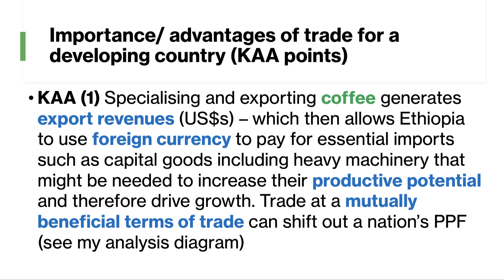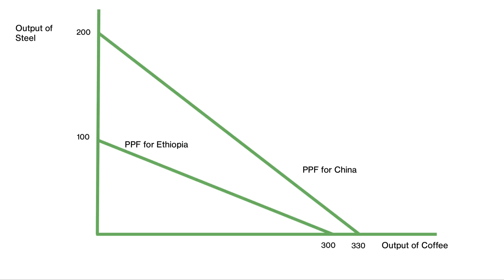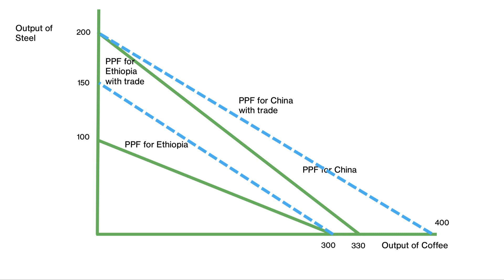Trade on mutually beneficial terms of trade can shift out a nation's PPF. What I'm trying to show is that trade and exports generate foreign exchange, and that money can be used to pay for imports which are themselves growth enhancing. You could use an aggregate demand and supply curve diagram. I'm going to use a PPF diagram here showing Ethiopia has a relative advantage in coffee and China is significantly better in steel. If Ethiopia trades coffee for steel at a ratio of two to one — the dotted blue line has a gradient of two to one — they can effectively shift out their PPF. China also stands to benefit, trading at two for one and exporting steel to Ethiopia. Essentially the argument is that trade can shift out a production possibility frontier, which is beneficial for both countries, but in particular for Ethiopia.